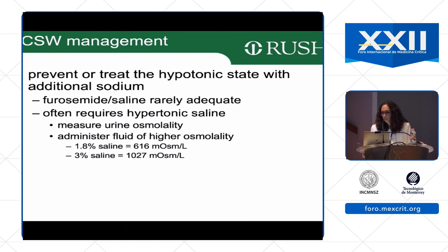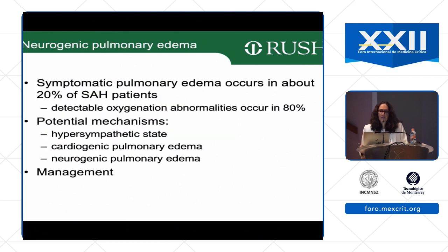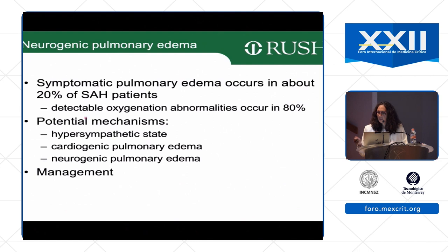Neurogenic pulmonary edema is not an uncommon complication of subarachnoid hemorrhage. Symptomatic pulmonary edema occurs in about 20% of patients, with detectable oxygenation abnormalities in about 80%. The potential mechanism is the hypersympathetic state from subarachnoid hemorrhage. It can also be cardiogenic due to stunned myocardium. To determine if it is purely neurogenic, confirm normal ejection fraction with no other cause.